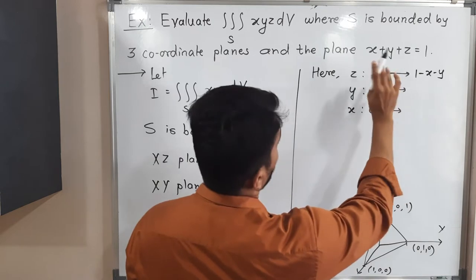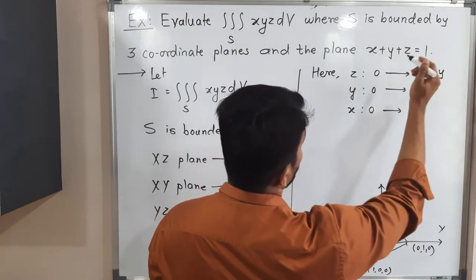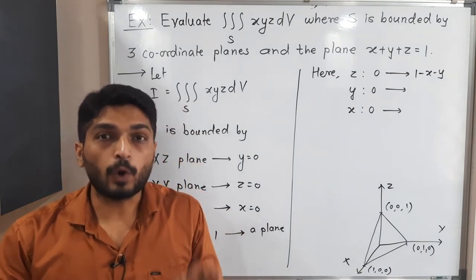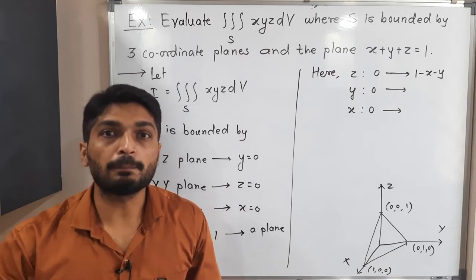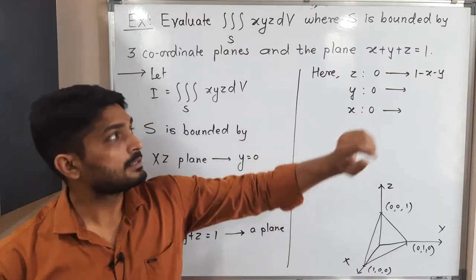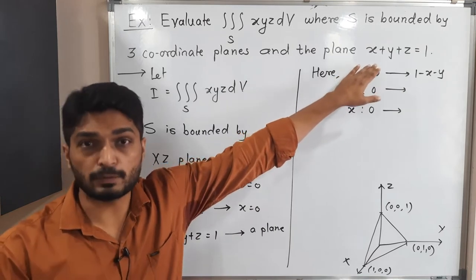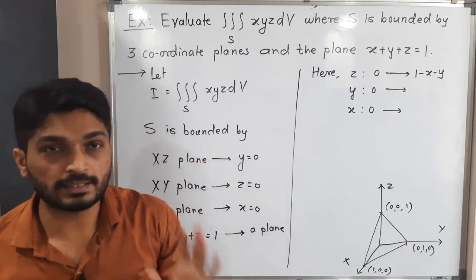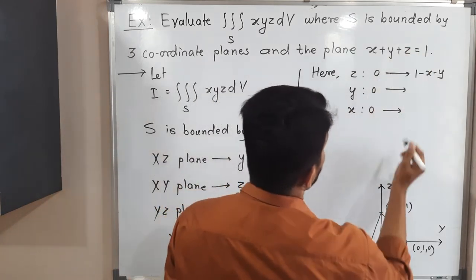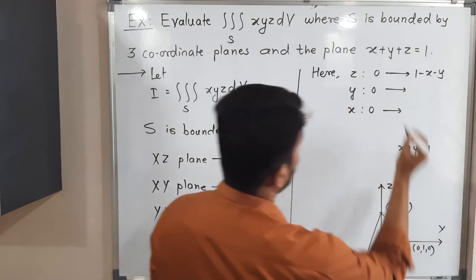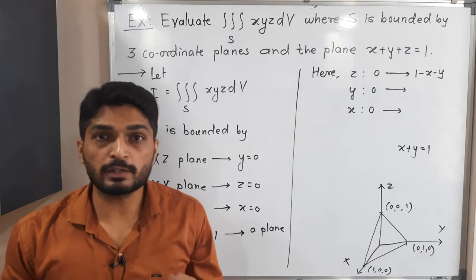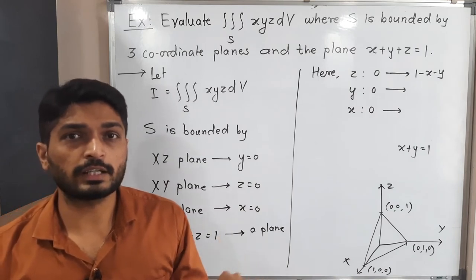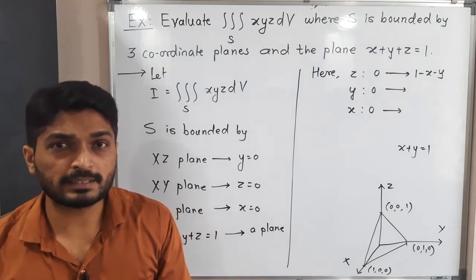So the upper limit of z is 1 − x − y. Now for the upper limit of y, we use the same equation but put z = 0, giving x + y = 1. Shifting x to the other side gives y = 1 − x, which is the upper limit of y.